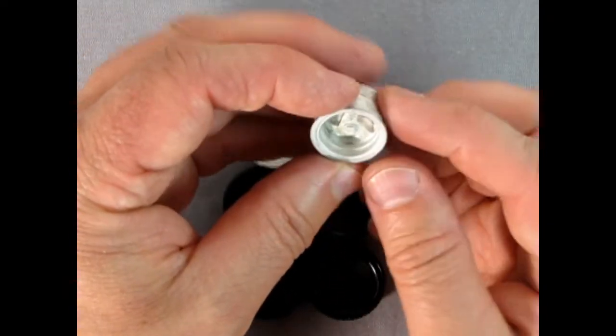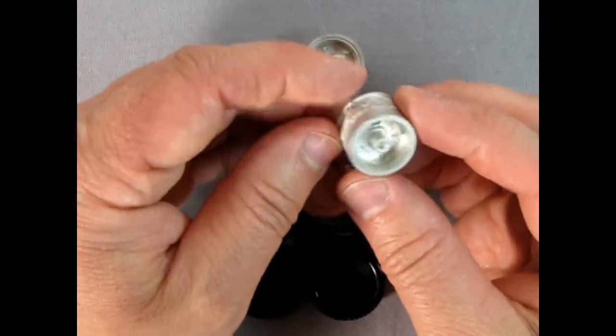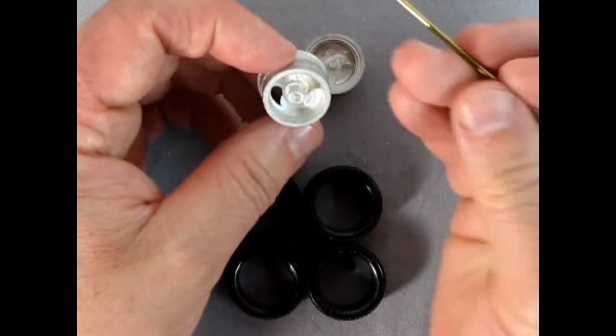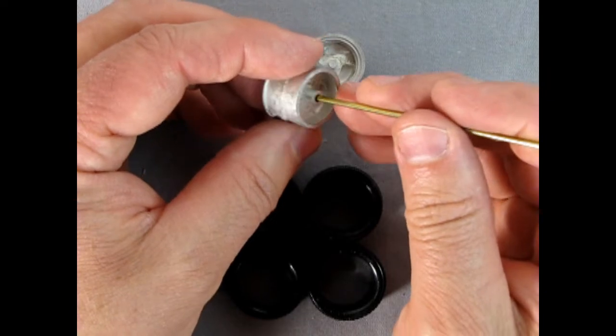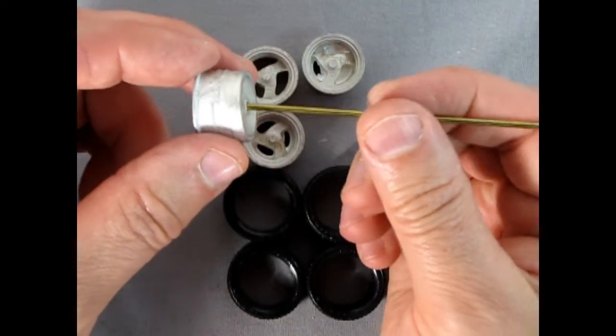You can see they've got a hole in the back just like AMT wheels and the metal axle will fit through.